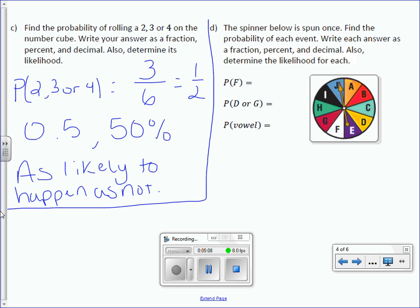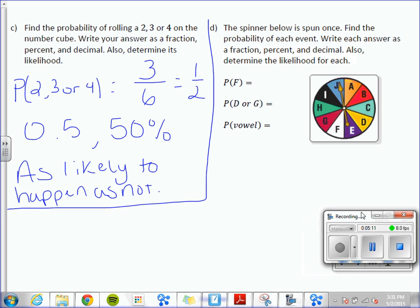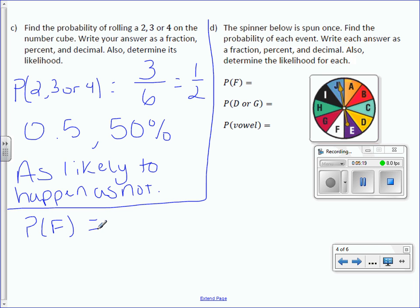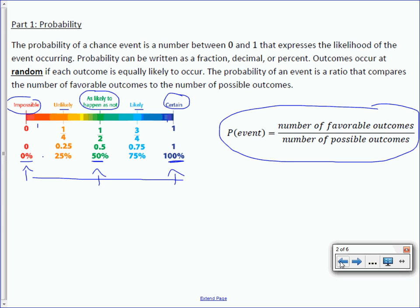Now, letter D, I didn't leave too much room here, so I'm just going to use my space underneath. So I'm just going to redo these down here. Okay. The spinner below is spun once. Find the probability of each event. Write each answer as a fraction, percent, and decimal. Also determine the likelihood for each. So if I'm looking at the spinner and I want to know the probability of F, there's one F out of how many letters? Well, count them. 1, 2, 3, 4, 5, 6, 7, 8, 9, 10. So the probability is 1 out of 10, which as a decimal is 0.1, as a percent is 10%. So at 10%, its likelihood is somewhere in here, which would be unlikely.